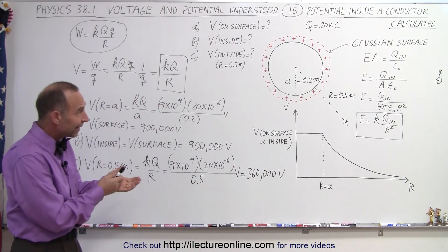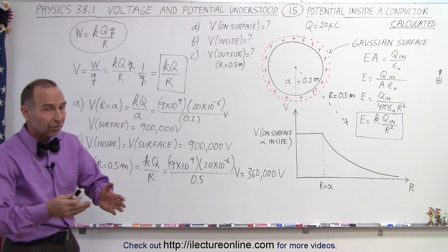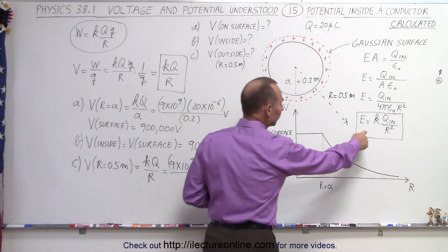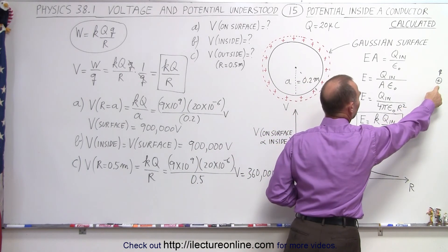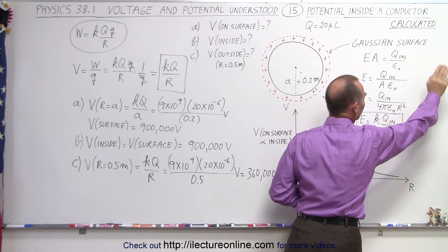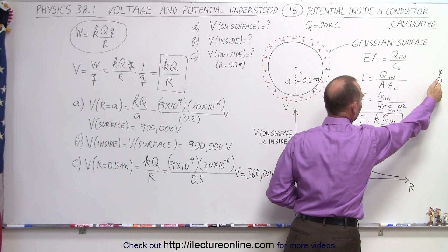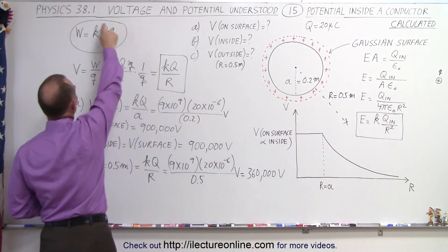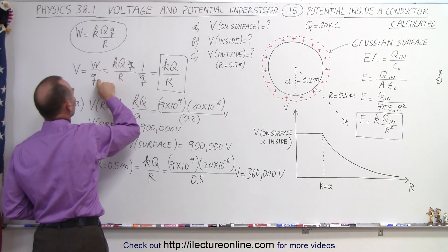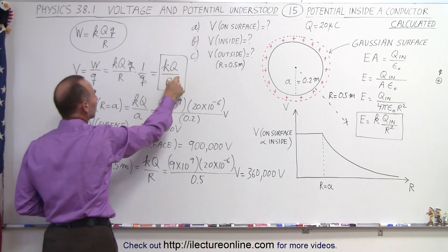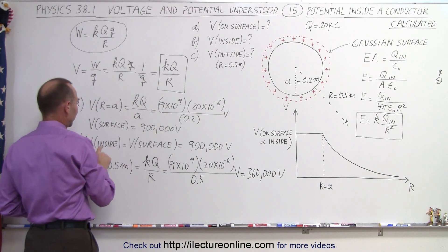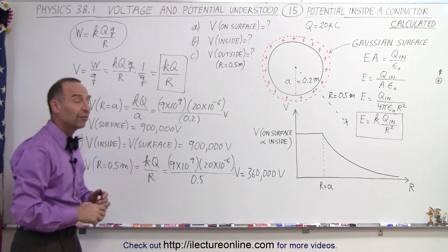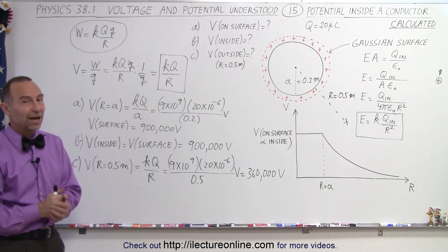That's how we determine the potential inside, on the surface, and outside a charged conductor. We start with the electric field using Gauss's Law, use that to find how much work it takes to bring a test charge q from infinitely far away where the potential is zero to the surface, divide by the test charge to get the potential equation V = kQ/r, apply it for the surface and outside by varying r, and note that the inside potential equals the surface potential.